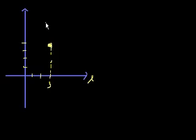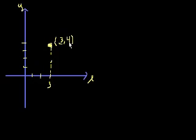Let me give the Cartesian coordinates for that point right there. To get to that point, I have to go to the right three steps — this is three right here — and then I have to go up four steps, and you end up there. By convention, we call this the x-coordinate, we call this the y-coordinate, and we call this 3 comma 4. The first coordinate is how far in the x-direction, the second is how far in the y-direction. So this is 3 comma 4.